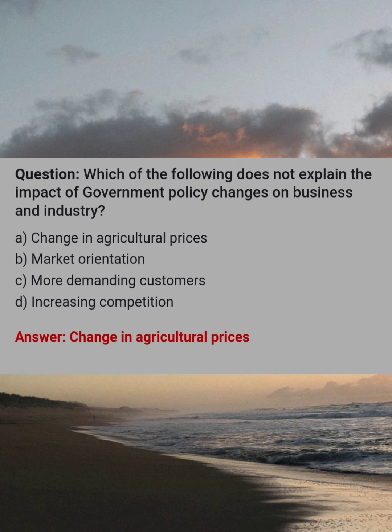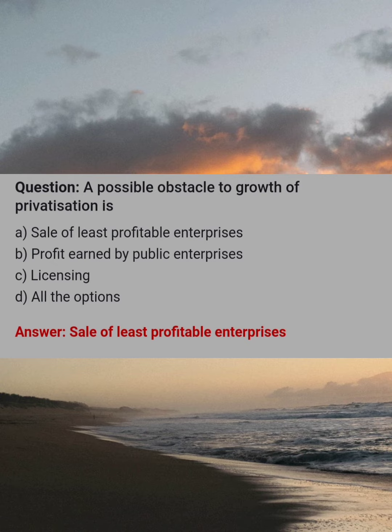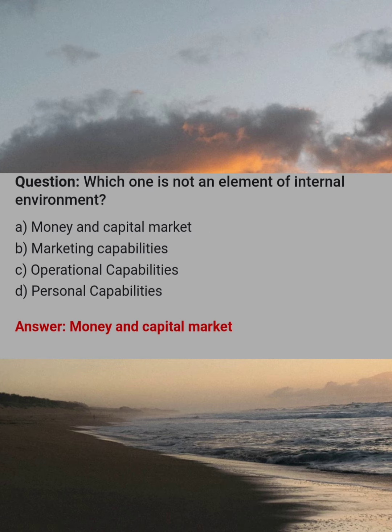Which of the following does not explain the impact of government policy change on business and industry? Answer: A, change in agriculture prices. A possible obstacle to growth of privatization is. Answer: A, sale of least profitable enterprises. Which one is not an element of internal environment? Answer: A, money and capital market.